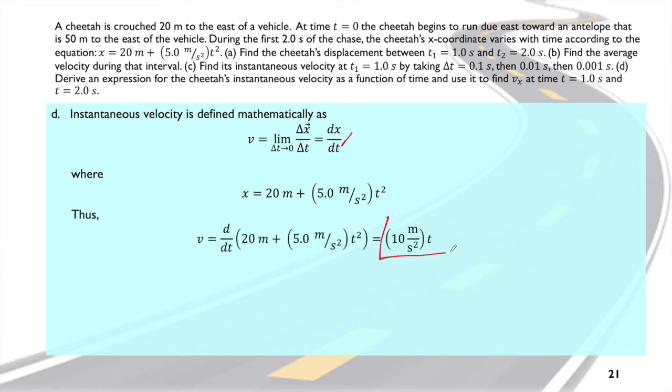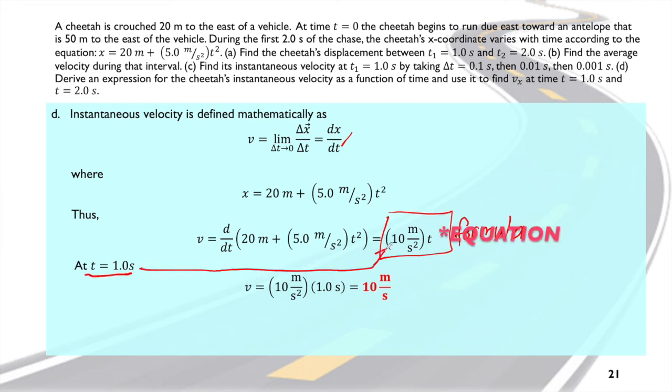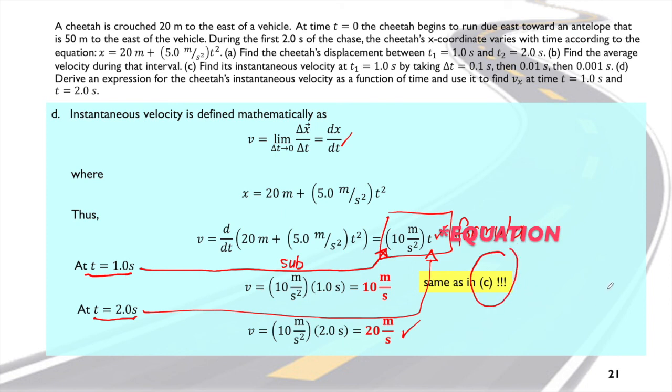Now if you have this equation, you can have the derivative of that equation and you will end up with this formula. At t = 1.0 seconds, substitute the value of t, that will give me 10 meters per second. I can also use this one and I will still substitute - I will still get 20 meters per second, which is almost the same with the answer in letter (c). Okay, so I hope this is helpful. Thank you for listening.